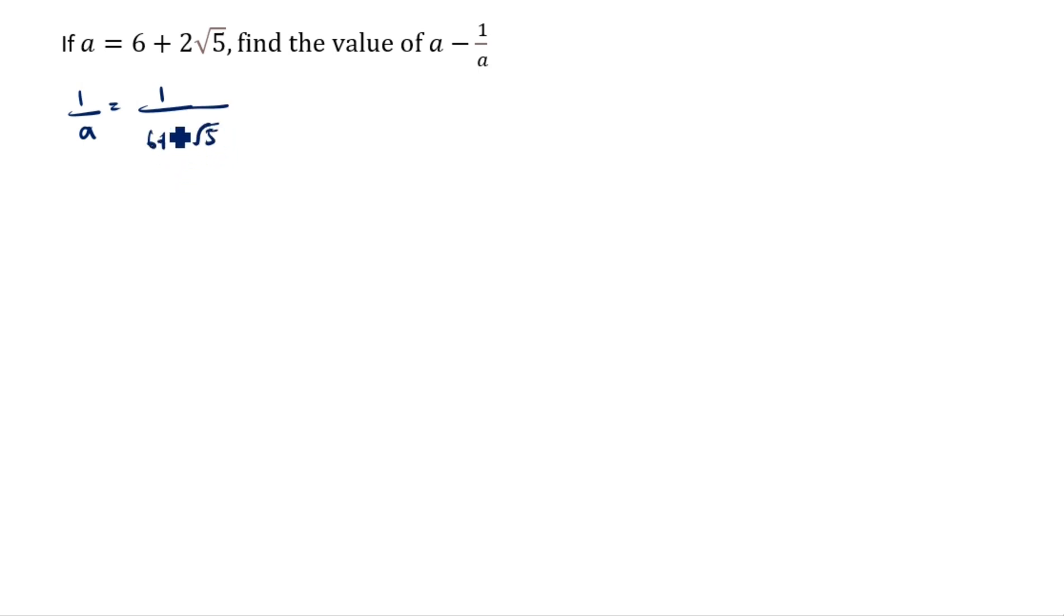Now we will rationalize the denominator. You see this denominator 6 plus 2 root 5, but we have to take here as 6 minus 2 root 5. Again, denominator you can take 6 minus 2 root 5. Numerator and denominator, same number you can take. Instead of plus, it's given minus. So what we will do, you can write it as plus here, both plus.